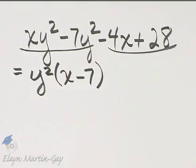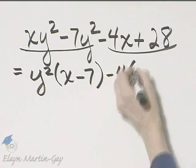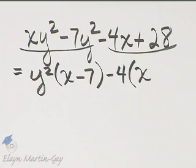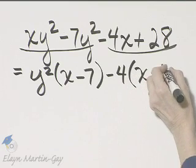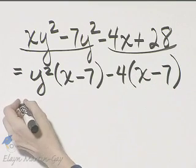Look at the second set of two terms. What's common? I'm going to factor out a negative four because I know I want a positive x here if there's any hope of factoring by grouping, and 28 divided by negative four, that's negative seven. You can check here by multiplying and I'll let you do that.